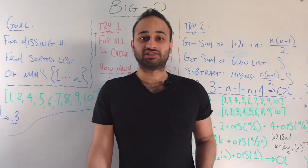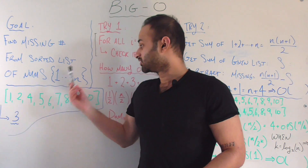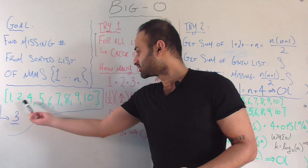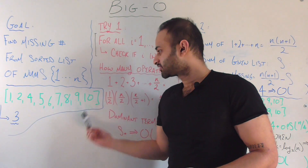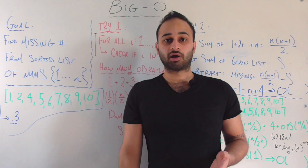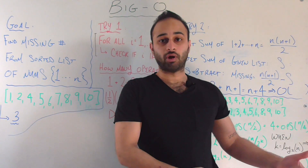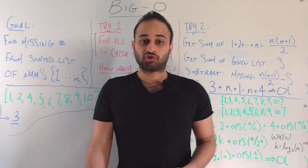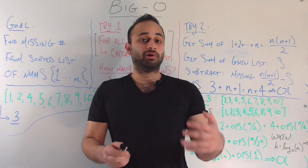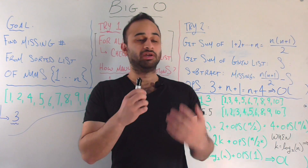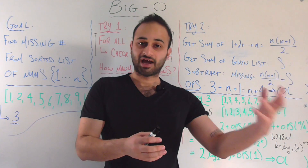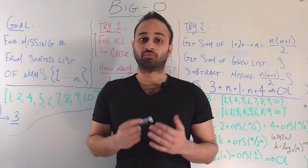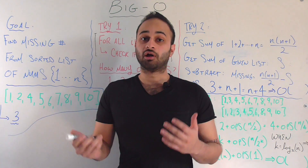Just to be very explicit, let's say that n was equal to ten. So we have just ten numbers in the list, and we need to figure out in some kind of programmatic way that three is the missing number from this list. Now let's go over three different ways to do it, each one improving on the last, quantified using big O notation.